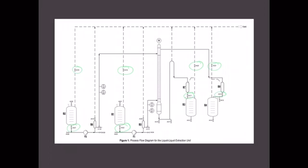Fill the column to a level of about 100 cm above the solvent inlet, then stop the pump. Switch on pump P1 so that pure toluene, the light phase or solvent, enters the column. Carefully watch the interface level which forms between the light and heavy phases. Maintain the interface level at 100 cm above the solvent inlet by adjusting the height of the overflow U-tube.